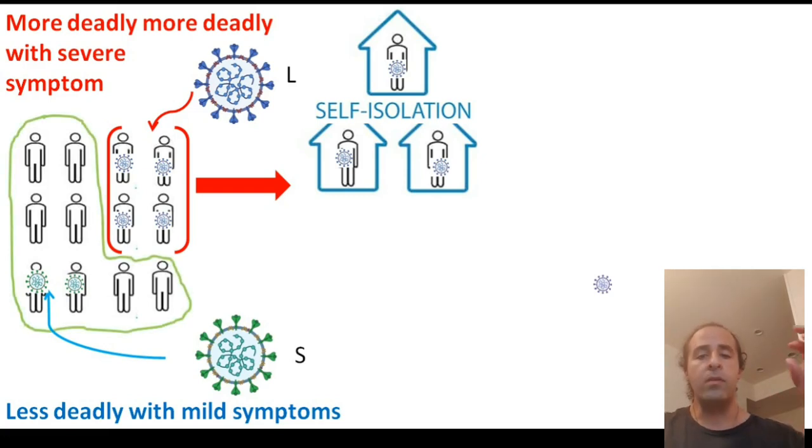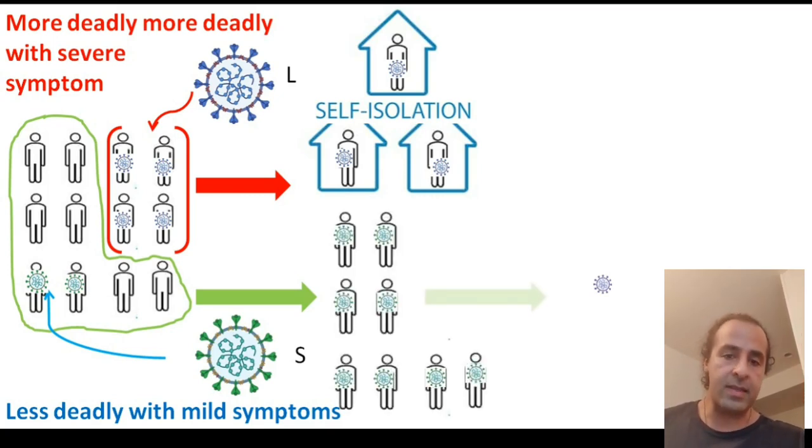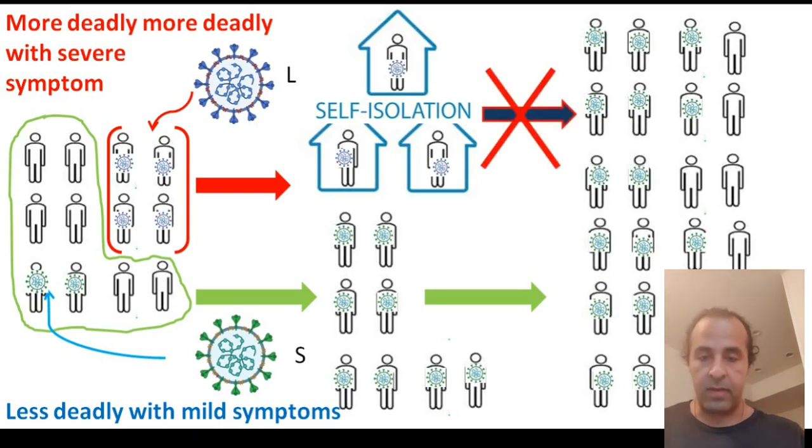Therefore, while the amount of people who get the L-type reduces inside the population, the amount of people who get the S-type, which is less deadly, only deadly to old people and people with certain conditions, is spreading throughout the population slowly. And the good part of this story is that whoever gets the S-type won't get the L-type anymore. So therefore, the majority of people who got infected by the S-type become like an umbrella over the people who get the L-type.